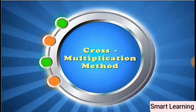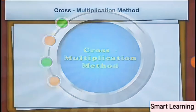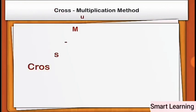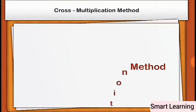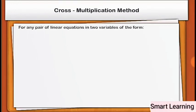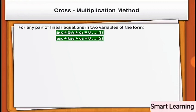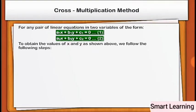Cross multiplication method. Now we introduce one more algebraic method — the cross multiplication method — to solve a pair of linear equations, which for many reasons is a very useful method. For any pair of linear equations in two variables of the form a1x + b1y + c1 = 0 (equation 1) and a2x + b2y + c2 = 0 (equation 2), we follow the shown steps to obtain the values of x and y.